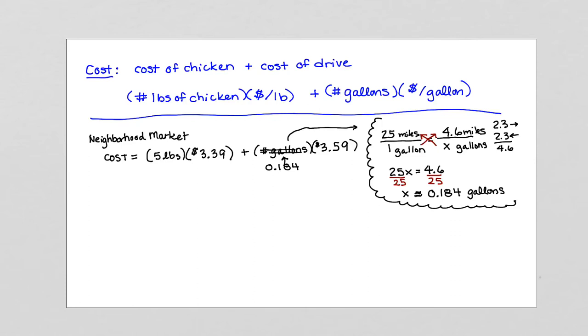Now let's actually calculate that cost. Cost is, pulling out our calculator, 5 times 3.39, which gives us 16.95, $16.95 for the chicken. Added to it, 0.184 times $3.59, and that gives us a cost of 0.66, and rounded to the nearest cent would stop right there, 66 cents. The total cost, then, to travel to the neighborhood market and purchase 5 pounds of chicken is $17.61. So that's our first cost.